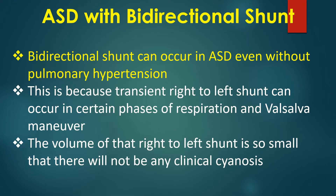Bidirectional shunt can occur in ASD even without pulmonary hypertension. This is because a transient right-to-left shunt can occur in certain phases of respiration and Valsalva maneuver.